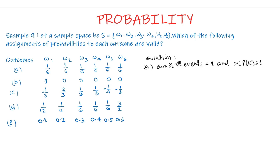We observe that each outcome ω1, ω2, ω3, ω4, ω5, and ω6 has probability 1/6, which is greater than 0 and less than 1, so each event is valid. The sum of all probabilities equals 1/6 + 1/6 + 1/6 + 1/6 + 1/6 + 1/6 = 1. Since the sum equals 1 and 0 ≤ P(event) ≤ 1, Part A is valid.